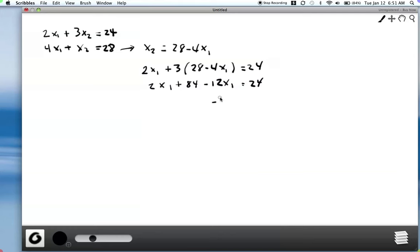So that gives me, it looks like negative 10x1 equals 24 minus 84 would be negative 60. So it looks like x1 is equal to 6. And then if x1 is 6, we can go back and plug in here to figure out what x2 is. So x2 is going to be 28 minus 4 times 6, so x2 is equal to 4. So x2 equals 4, x1 equals 6 is our solution. So that's one way to solve this system. That's using the method of substitution.